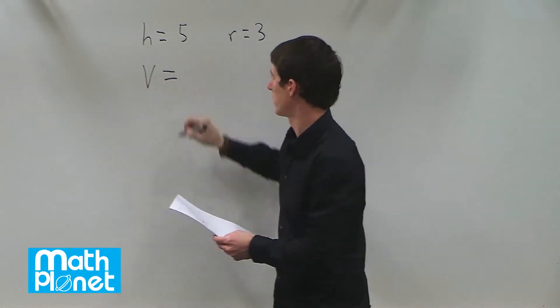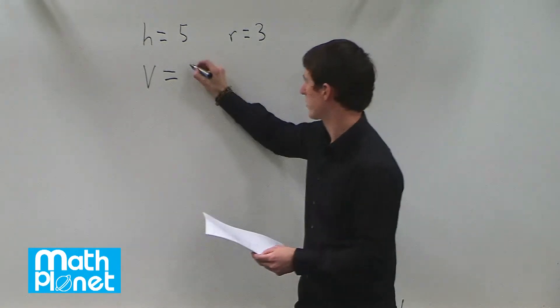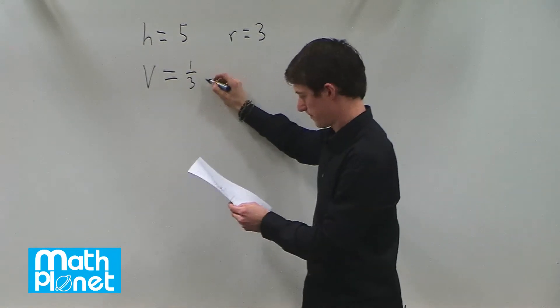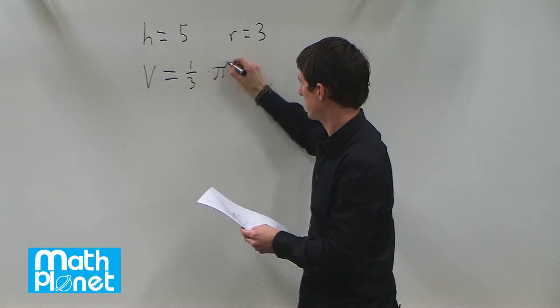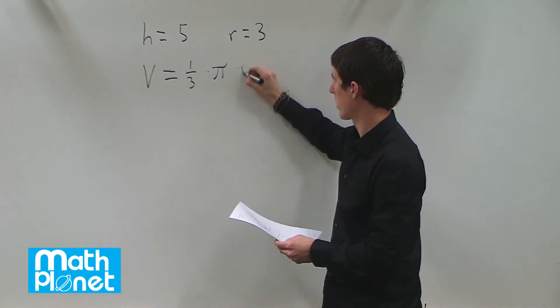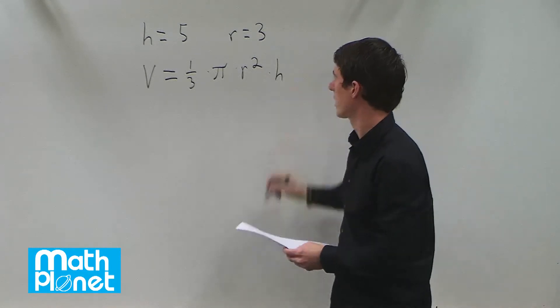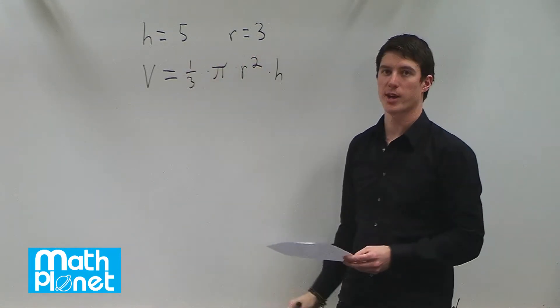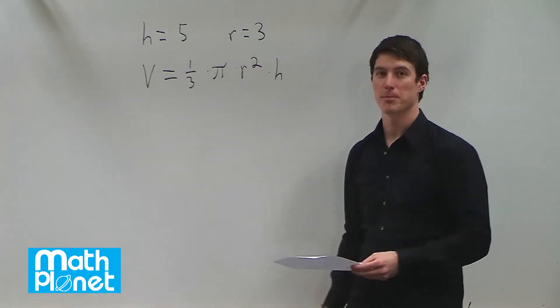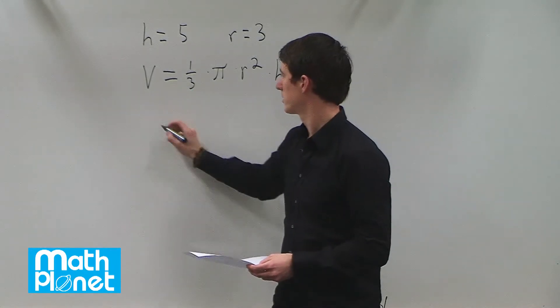So the volume formula for a cone is 1 third times pi times r squared times h. So we just need to plug in or evaluate with these values of h and r, and then we'll get the volume for this cone.